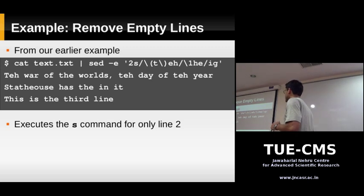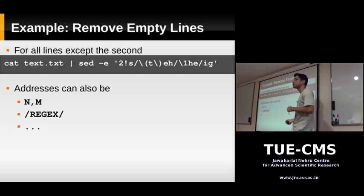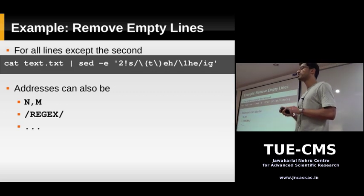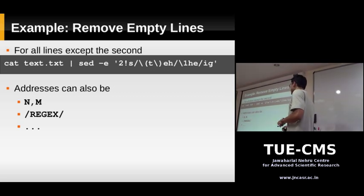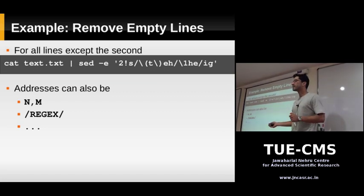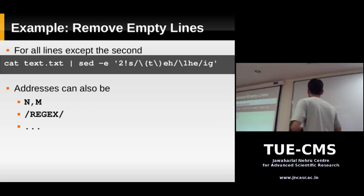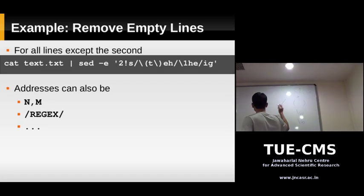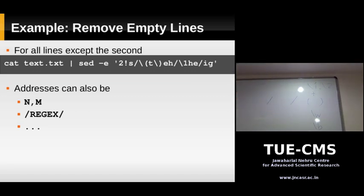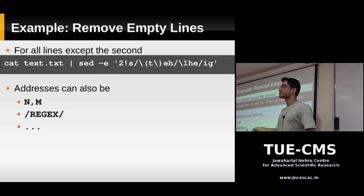You know what addresses are. You can put addresses in the form 2,5 which performs the command for lines 2 up to 5, including both. Now this is the kind of address we need — it's a regular expression. If you put an address like this, the regular expression is between forward slashes. This is itself an address. If you have an address like this, it performs a command when that regular expression matches that line.